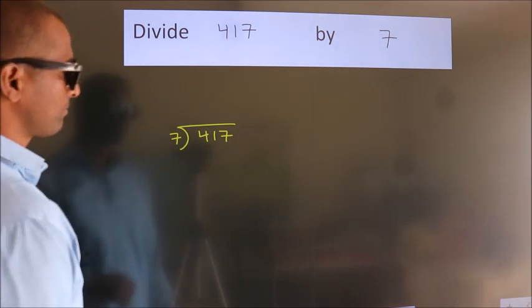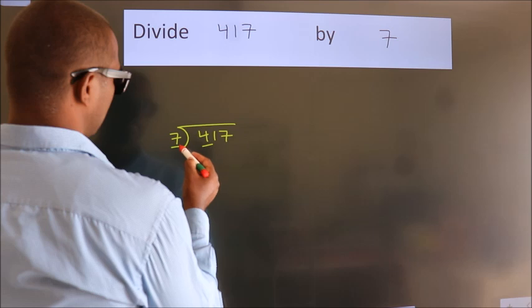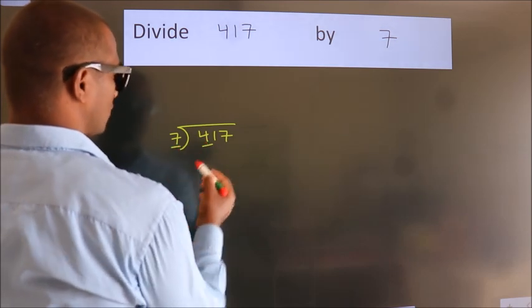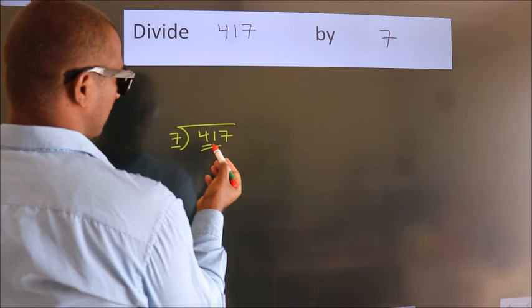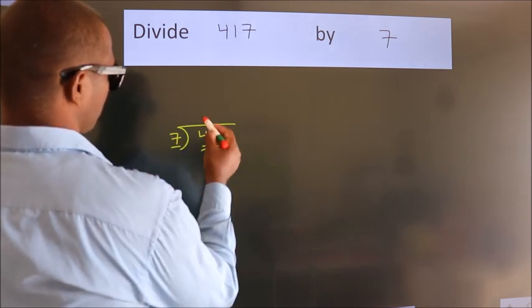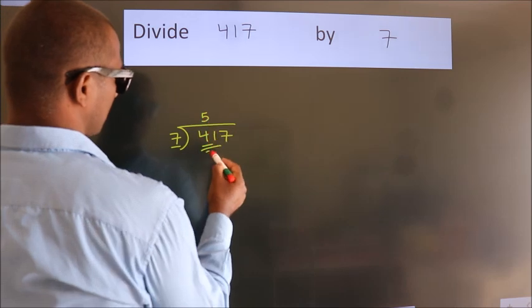Next. Here we have 4, here 7. 4 is smaller than 7, so we should take 2 numbers: 41. A number close to 41 in the 7 table is 7 fives, 35.